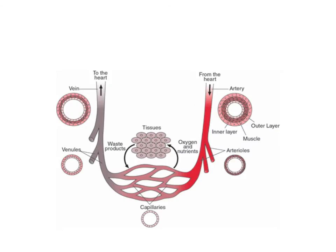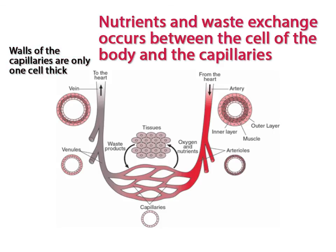The walls of the capillaries, which are the smallest blood vessels in the body, are only one cell thick. Because nutrients and waste exchange occurs between the cells of the body and the capillaries, it is important that the walls of the capillaries are only one cell layer thick, as this allows for the easy exchange of nutrients and waste across the capillary wall. If you are asked to describe the structure of the capillaries, it is not good enough to say that they have thin walls — you must clarify that the wall of the capillaries is only one cell thick.